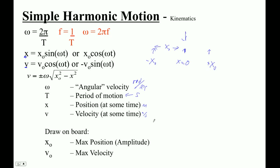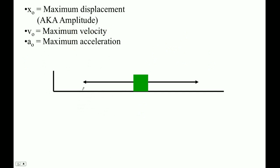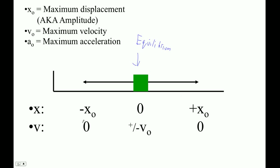The mass oscillates back and forth. Minus the maximum amplitude is on one side; positive maximum amplitude on the other. The equilibrium point at zero is where the object could be at rest — if you stopped it there, it could actually stay. If you stop it elsewhere and release it, it'll oscillate back and forth. Velocity at the edges is zero, and in the middle it's either positive or negative maximum velocity.